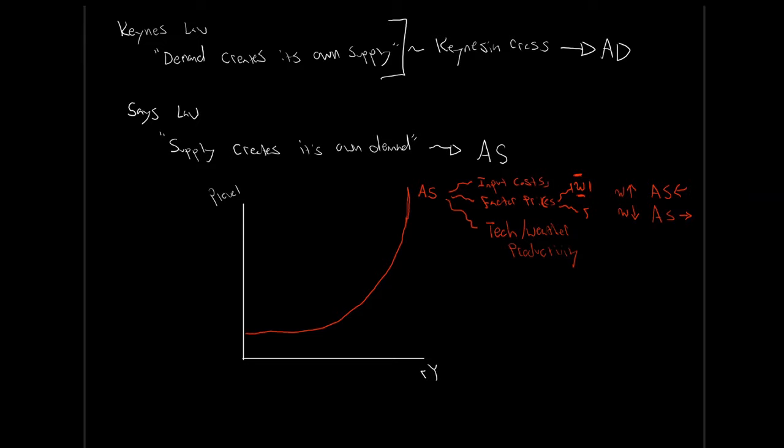Input costs are other inputs into our production process - raw materials, energy, oil, natural resources, lumber, and so on. Very similar to factor prices: if the energy price goes up, it costs more money to make electricity, which is an input into a lot of our production processes. Higher cost of electricity means more cost of production for a fixed price level, so we won't be able to produce as much - aggregate supply shifts to the left. If input costs are dropping, we'll be able to produce more, so falling input costs shift the aggregate supply curve to the right.